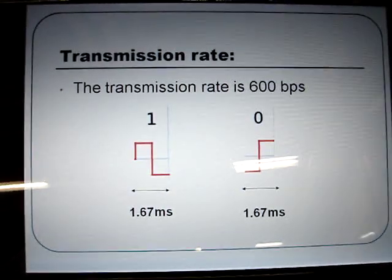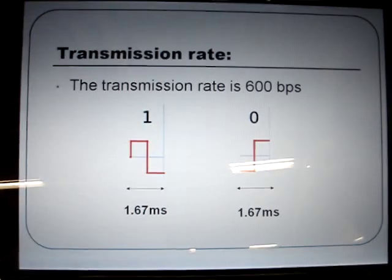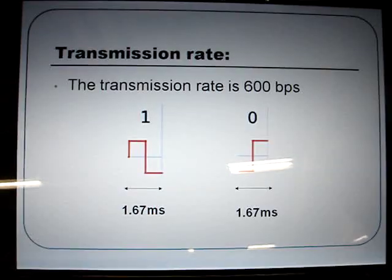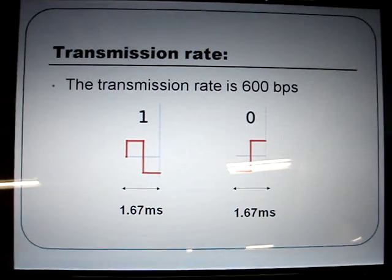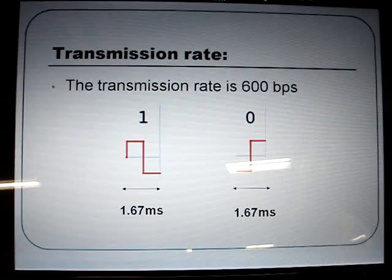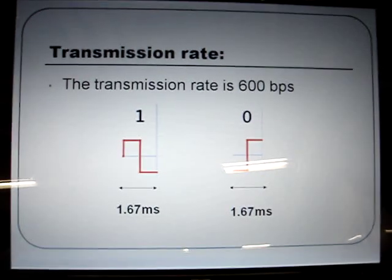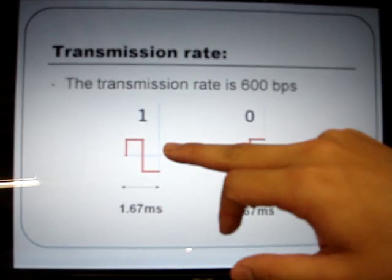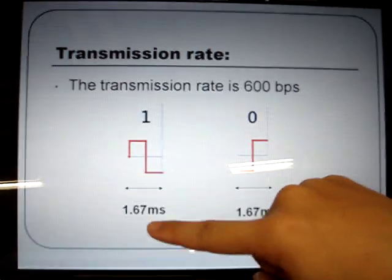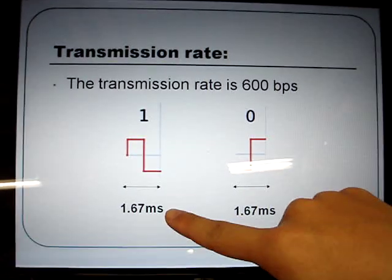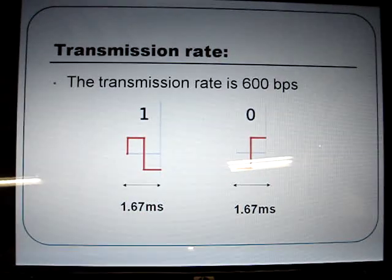What is the transmission rate of our project? For our requirements, the transmission rate is 600 bits per second. That means for the Manchester code period, one bit is about 1.67 milliseconds.